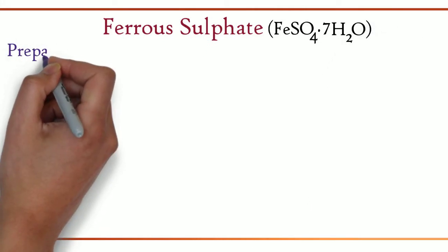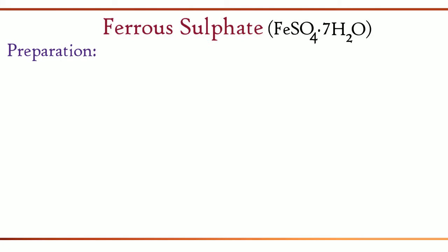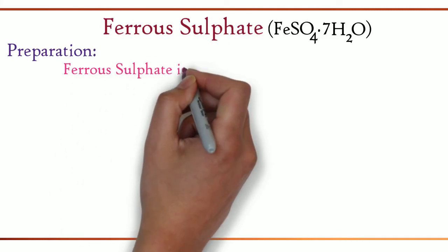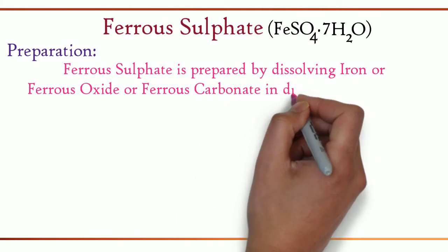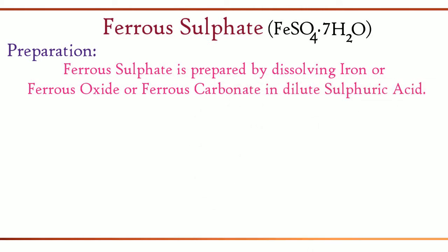Now, let us see the preparation. The preparation of ferrous sulfate is similar to that of copper sulfate. Ferrous sulfate is prepared by dissolving iron or ferrous oxide or ferrous carbonate in dilute sulfuric acid.